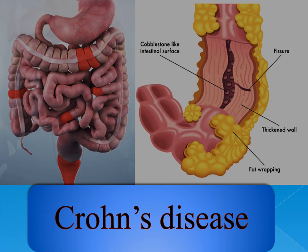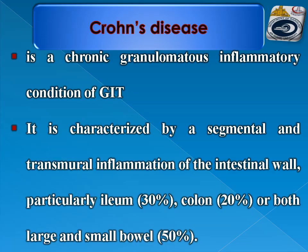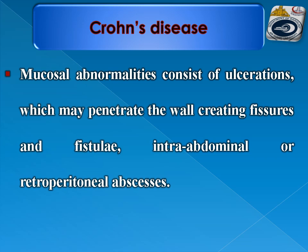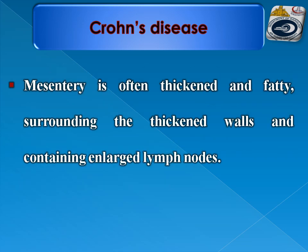Crohn's disease is a chronic granulomatous inflammatory condition of the GIT characterized by segmental and transmural inflammation of the intestinal wall, particularly the ileum in 30% of cases, colon in 20%, or both large and small bowel in 50% of cases. Mucosal abnormality consists of ulcerations which may penetrate the wall, creating fissures and fistulae, and causing intra-abdominal or retroperitoneal abscesses. The mesentery is often thickened and fatty surrounding the thickened bowel wall and containing enlarged lymph nodes — called creeping fat.